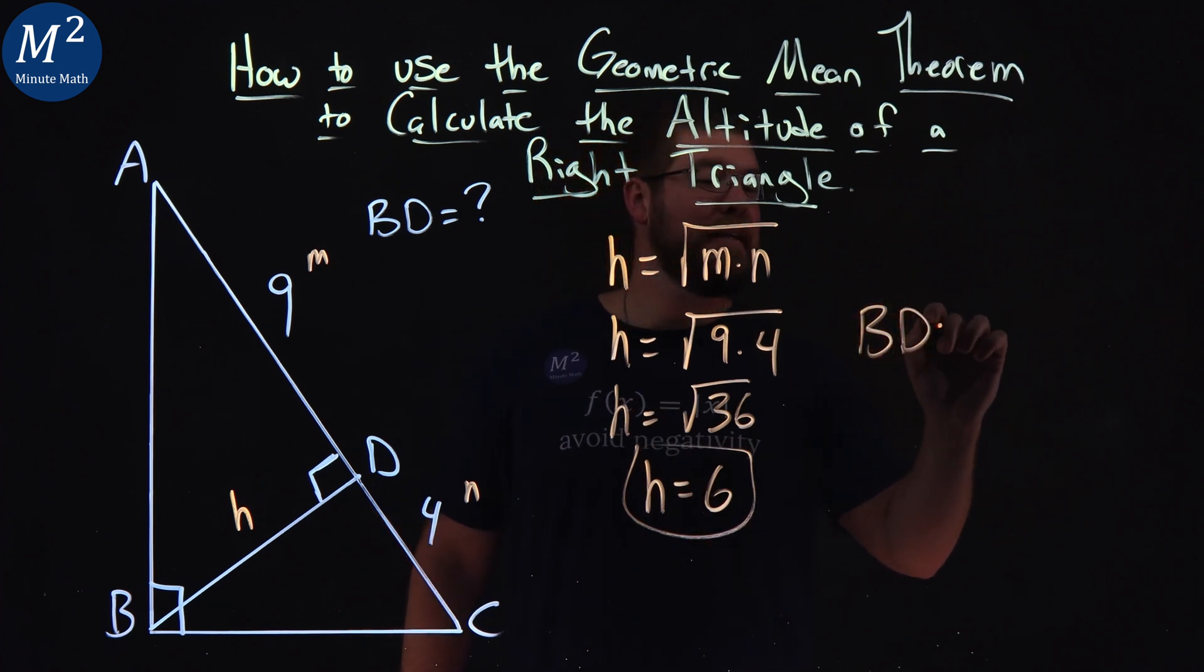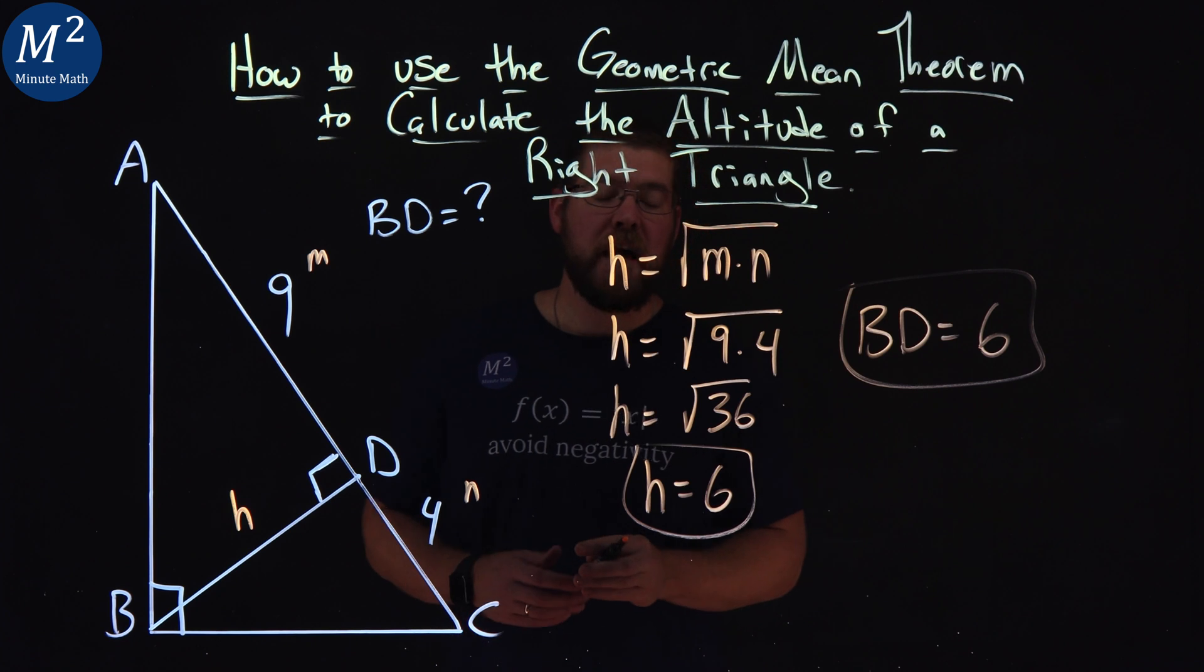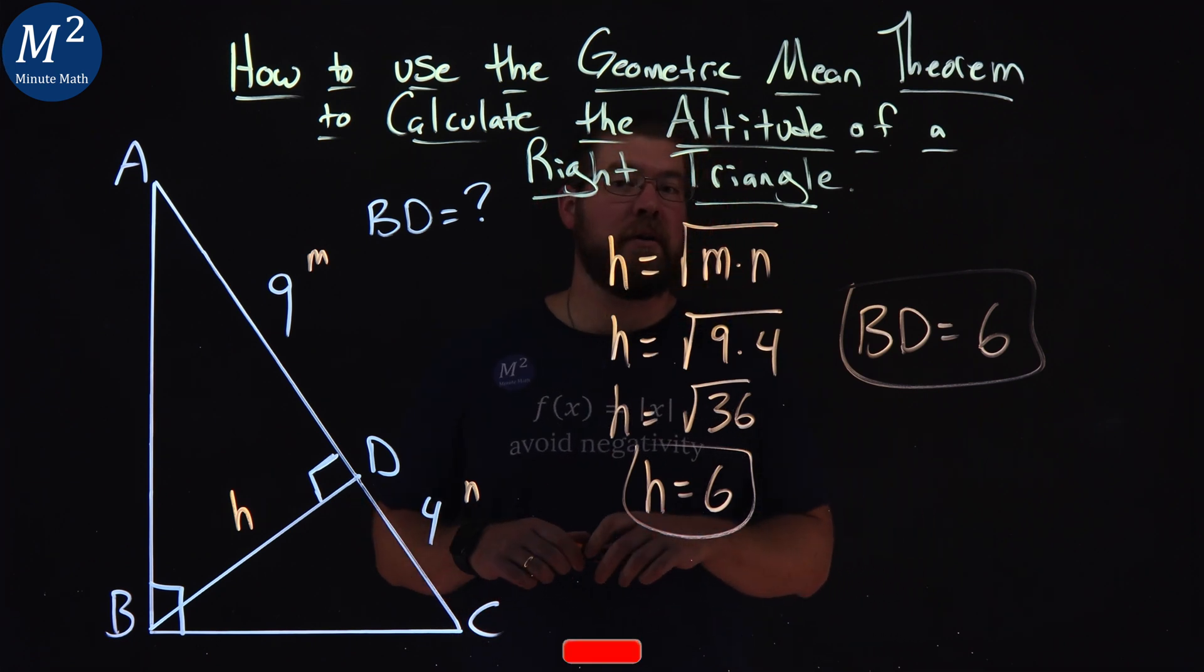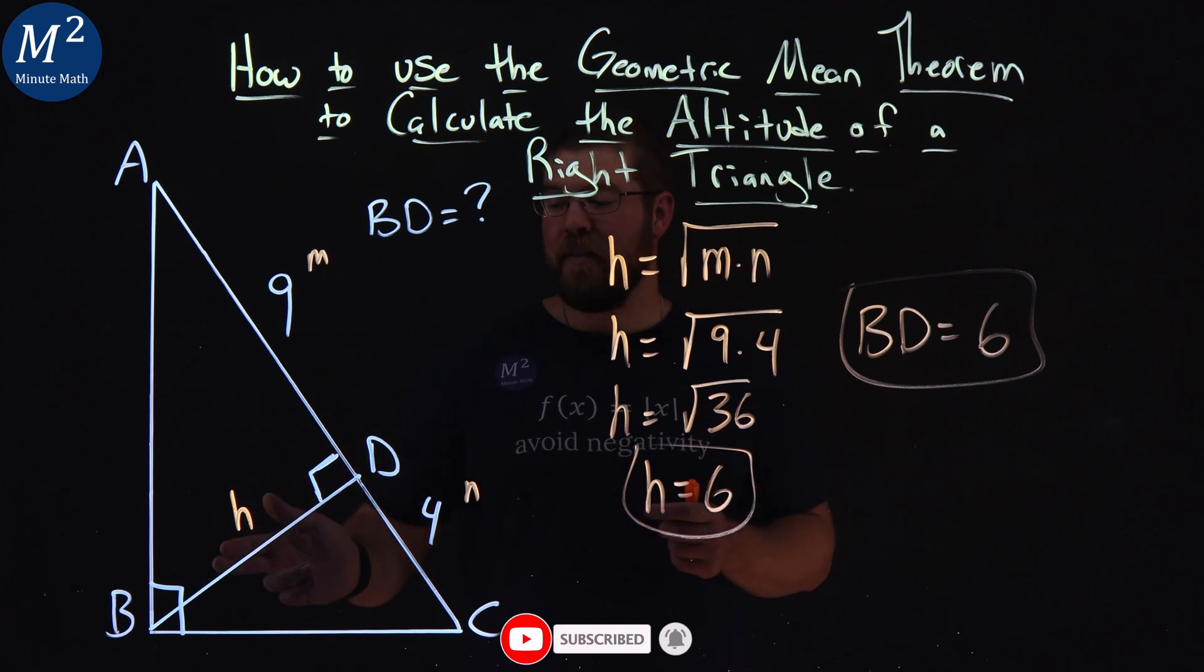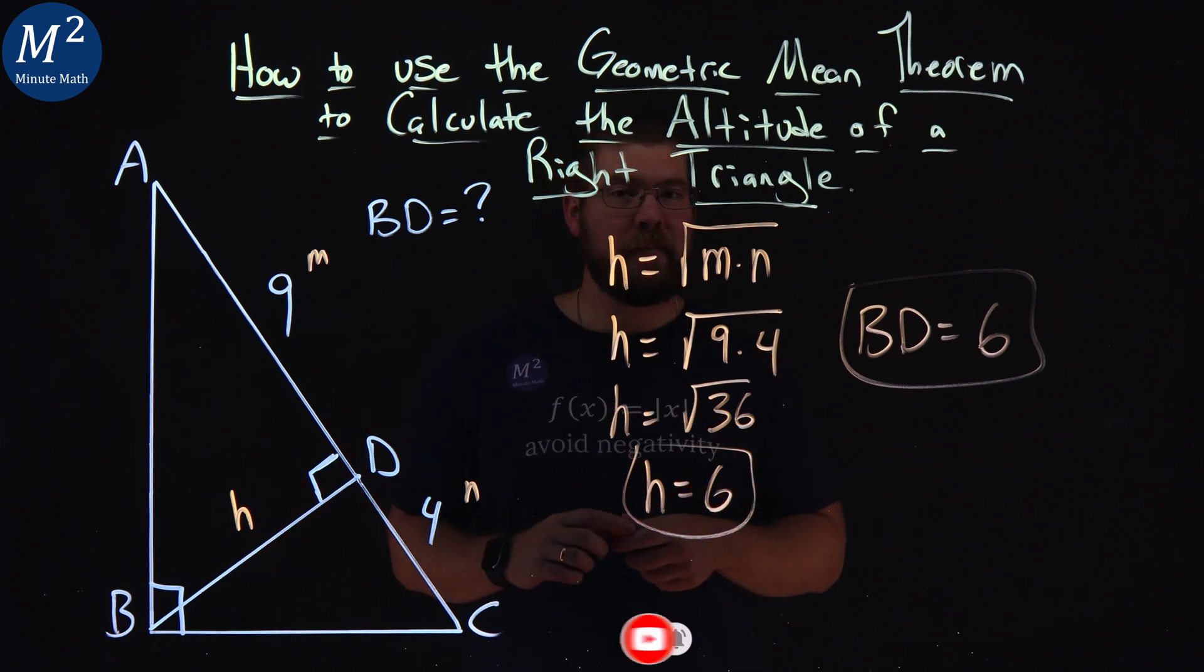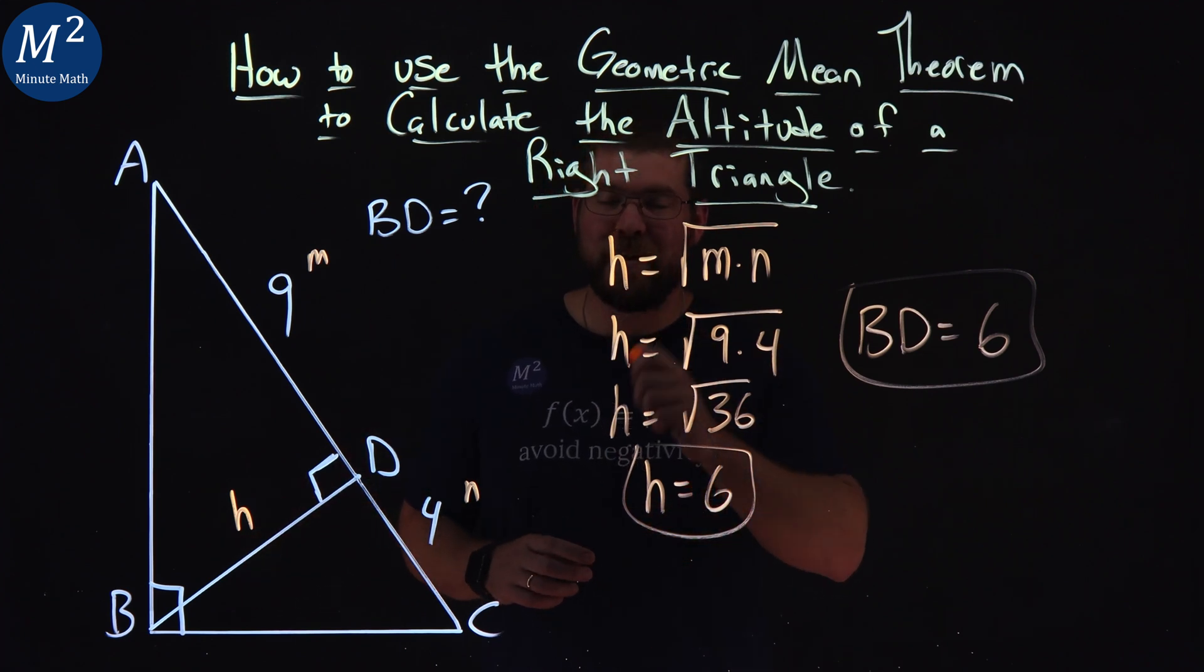Our value of BD is 6 right here. And we found that using the geometric mean. Now, see if you can find the other two ways or methods to get that length of BD. But as always here, thanks for watching.